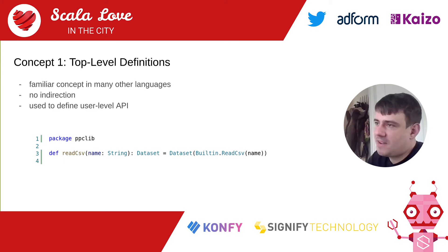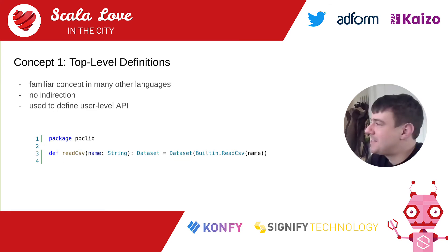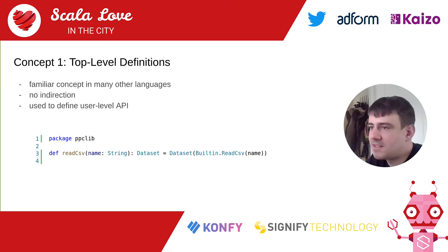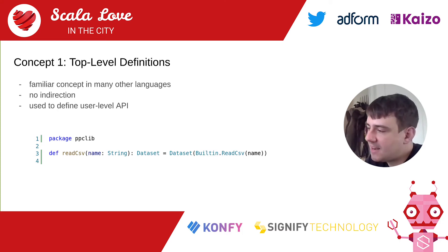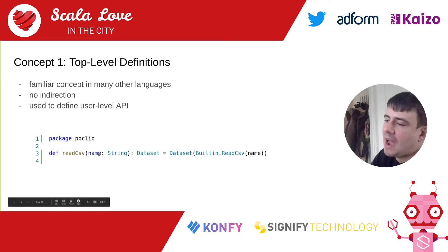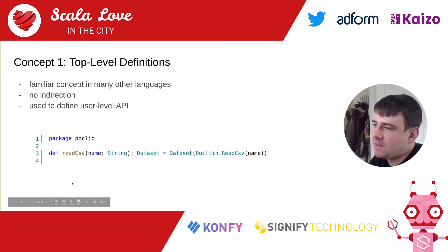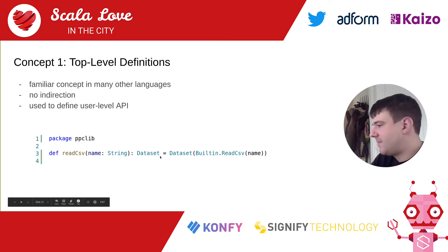The first concept is very short. Scala 3 now has top-level functions, which basically almost all other languages do, but Scala did not — and Java does not either, so it's almost trivial. It does have some nice advantages: there's no indirection, it's basically as direct as you can get. How we bridge from the user-level API defined as top-level functions to our staged API is pretty straightforward — we just initialize the object.